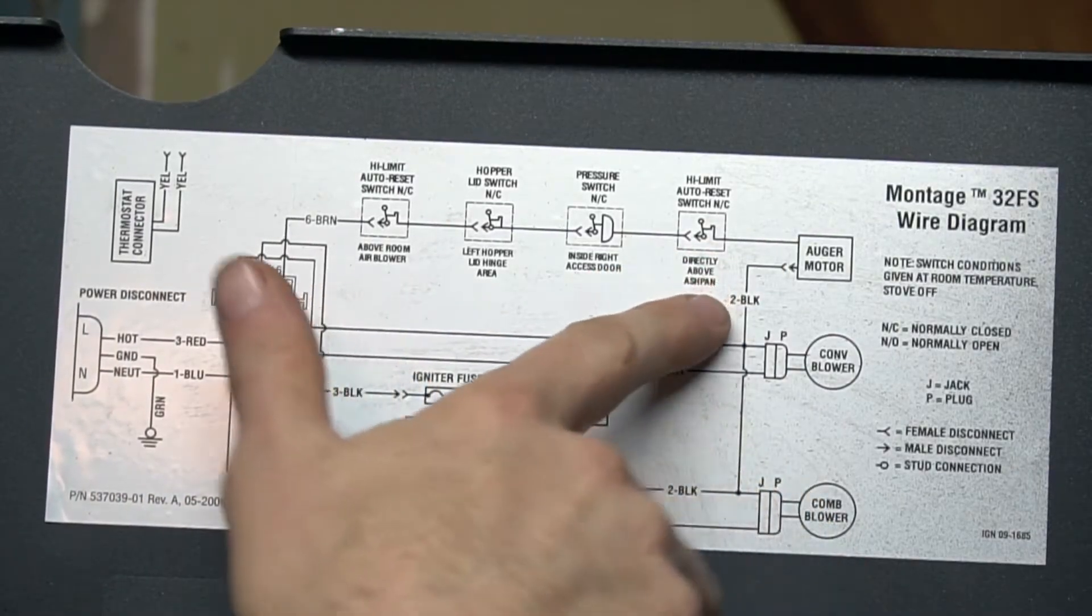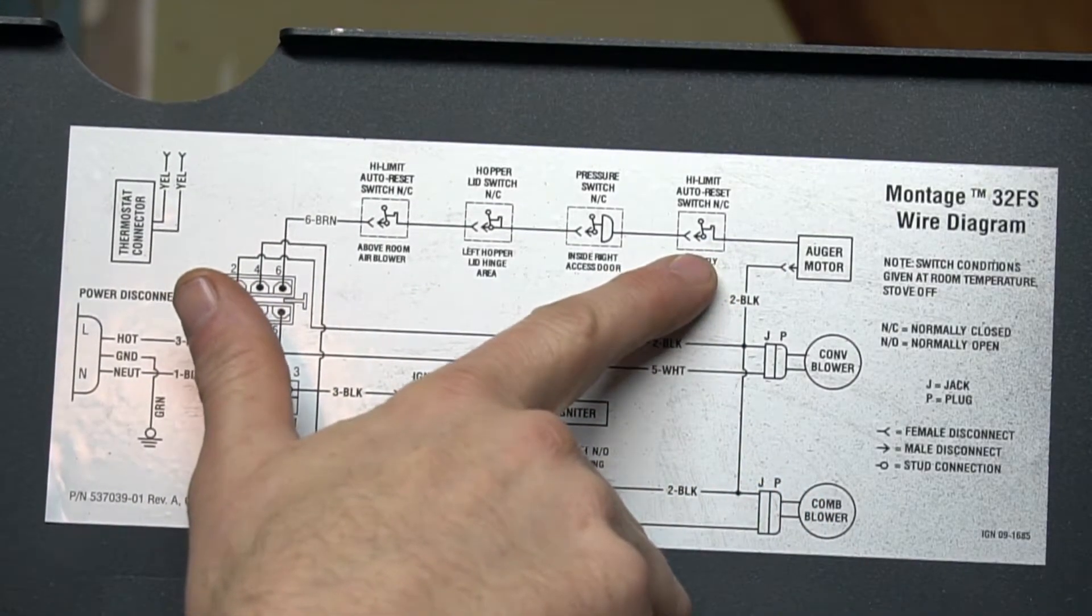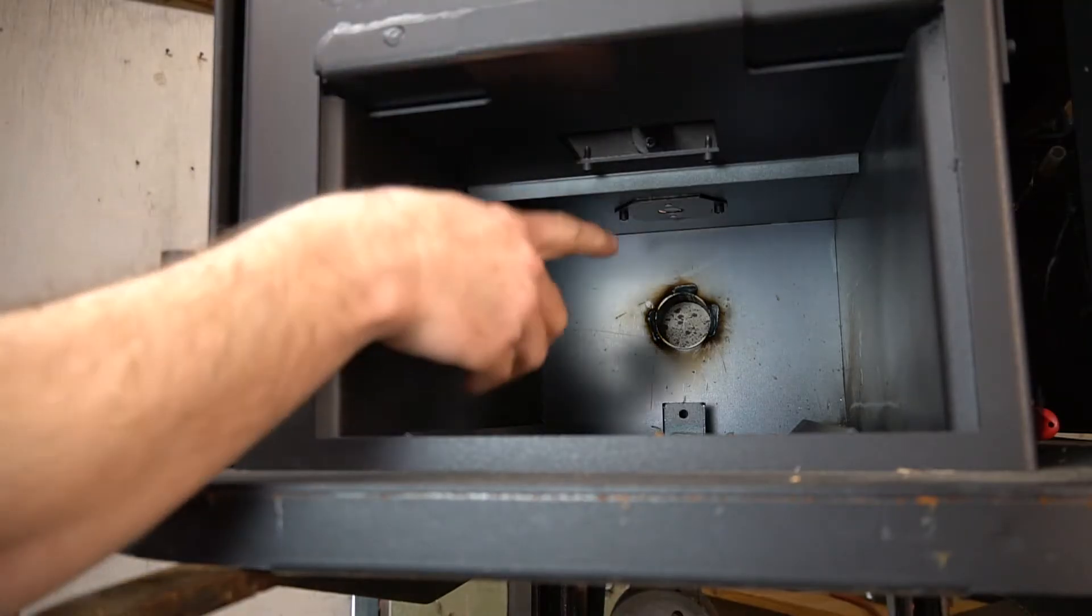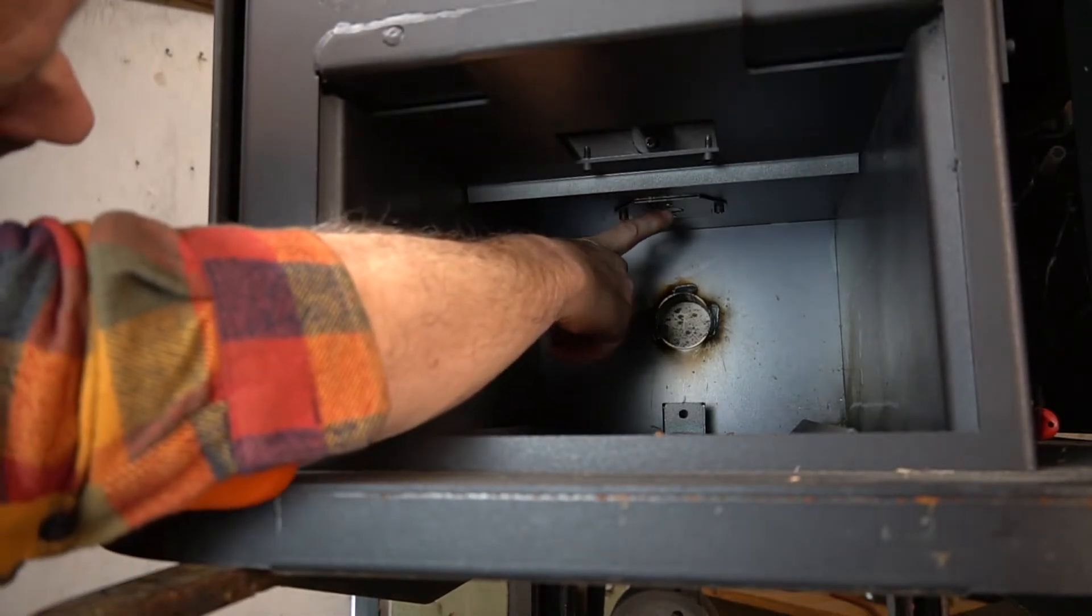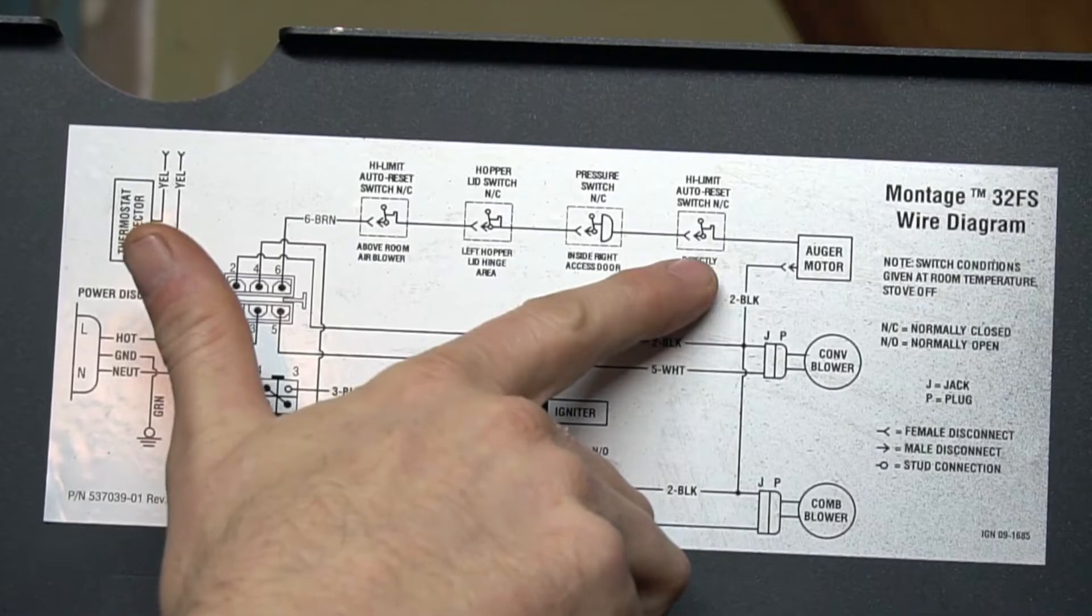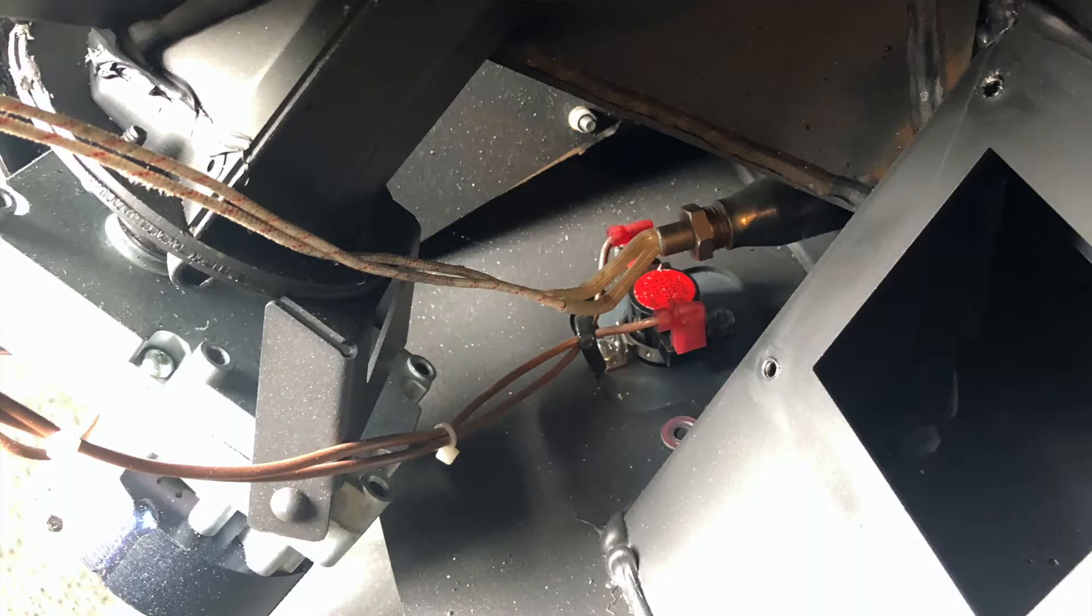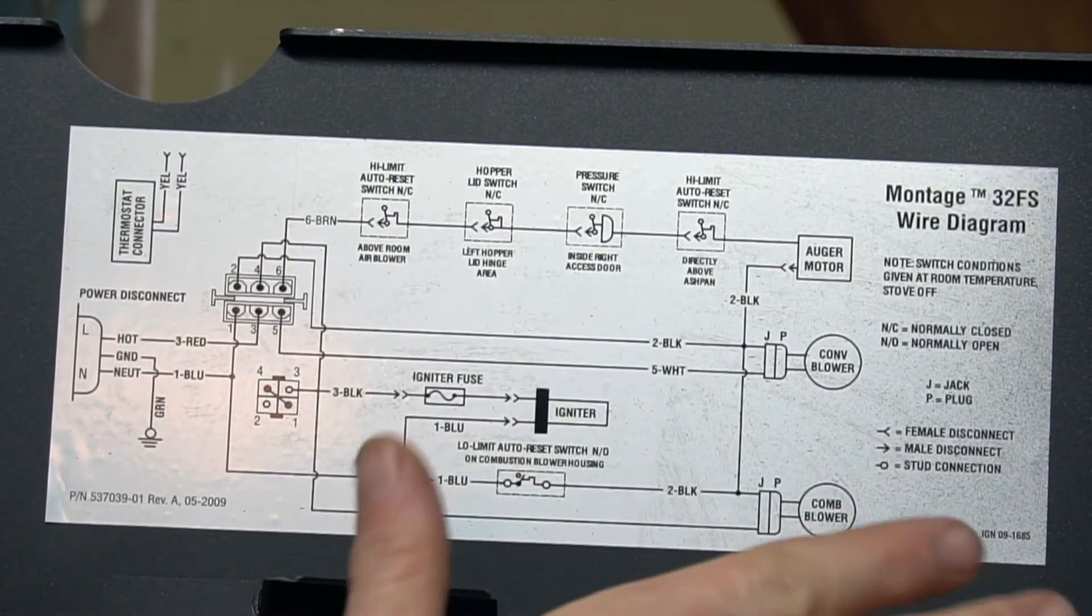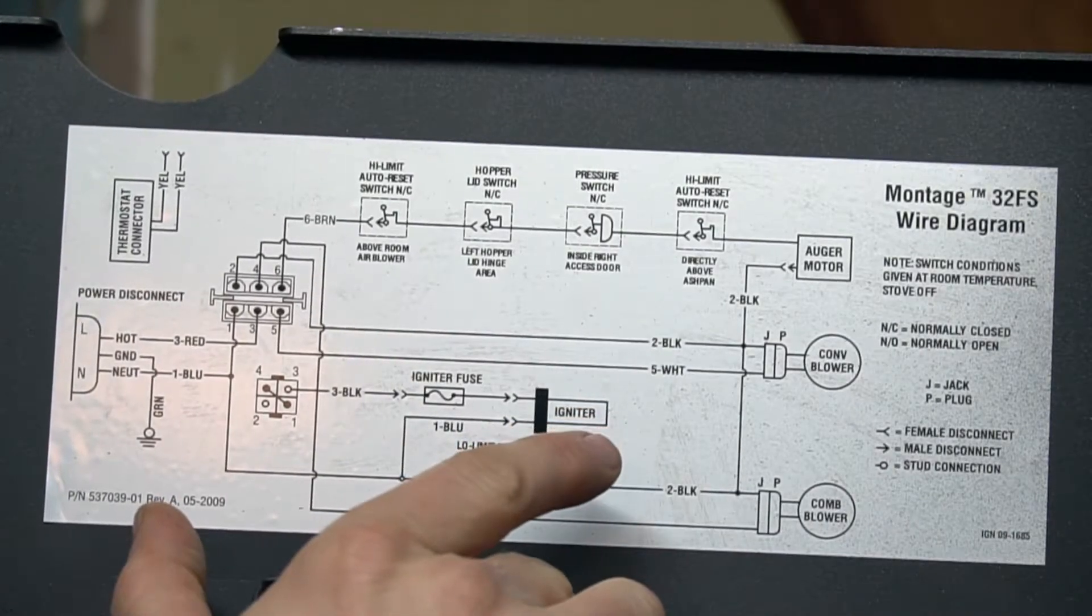And then the last one is the other high limit normally closed switch. And this is above the ash pan. And if the ash pan has got a smoldering fire or something in there, it's going to set that switch to open and that will cut off your auger feed circuit. And if you have something like that, you can take the ash pan out, let it cool down, and then try it again and get rid of whatever mess is in there.